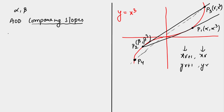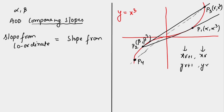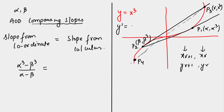To find the relation between alpha and beta, we compare slopes. First, the slope from coordinate geometry between P1 (alpha, alpha³) and P2 (beta, beta³) is (alpha³ − beta³) / (alpha − beta). The slope from calculus: since Y' = 3X², the derivative at P1 = (alpha, alpha³) gives dy/dx = 3α².